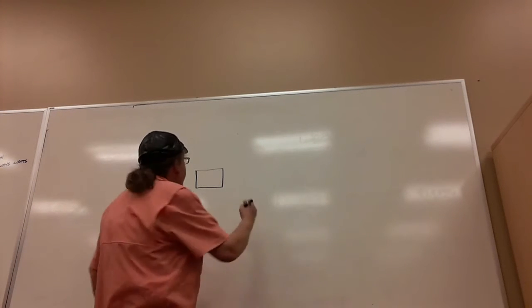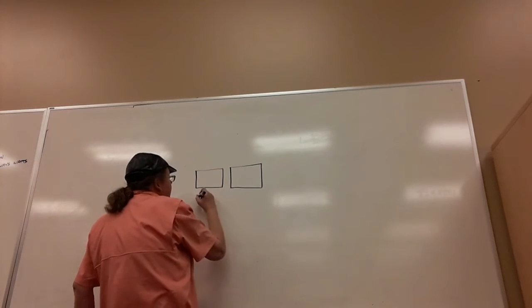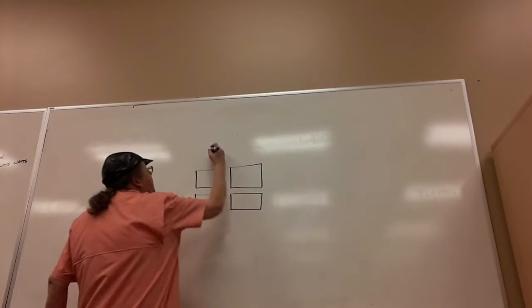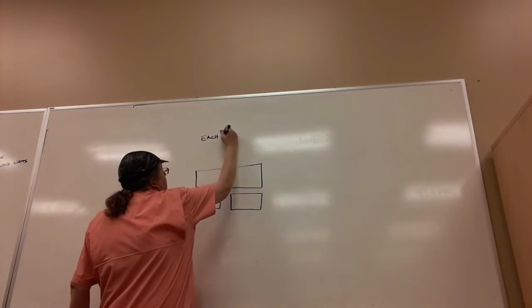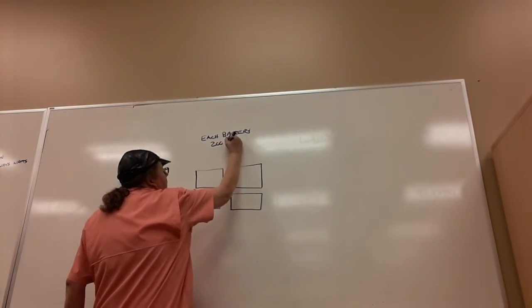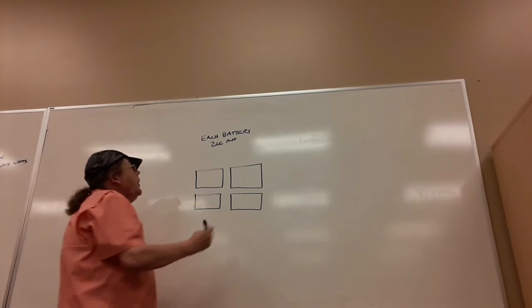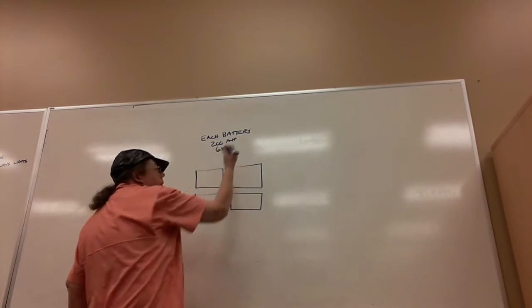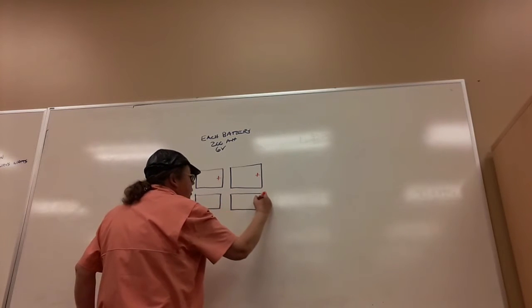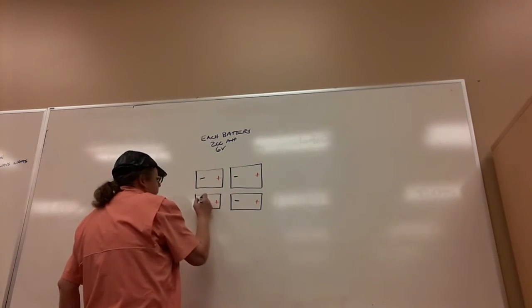This was a 12-volt power system, so he had four batteries. Each battery was 200 amp hours, right from the catalog and right from the sticker print on the top of the battery. Each battery was six volts, and here's the terminals labeled plus and minus, plus and minus.